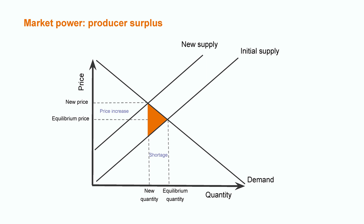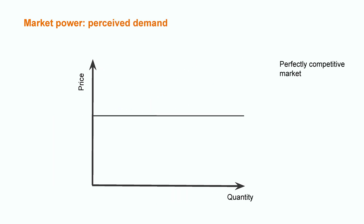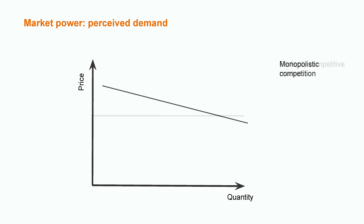It represents the share of global welfare that is lost because the market does not achieve equilibrium. We can also represent the perceived demand from the perspective of the firm. In a perfectly competitive market, the firm cannot change the price. If it changes the quantity sold, the price will be the same. In a monopolistic competition, changes in price are translated into more or less quantity sold, but the relationship is weak.